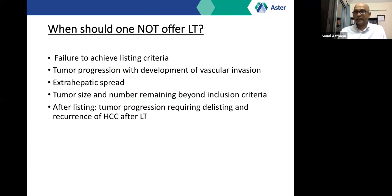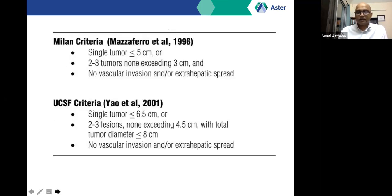Contraindications to transplant include tumor progression with vascular invasion or extra-hepatic spread, tumor size and number remaining beyond inclusion criteria despite downstaging, tumor progression requiring delisting, and recurrence of HCC after liver transplantation. Patient-specific factors such as performance status also determine suitability for both resection and transplantation. Two criteria are followed worldwide: the Milan criteria and the UCSF criteria.